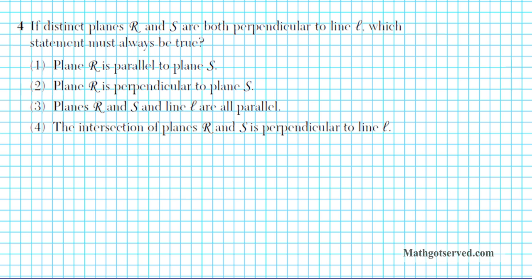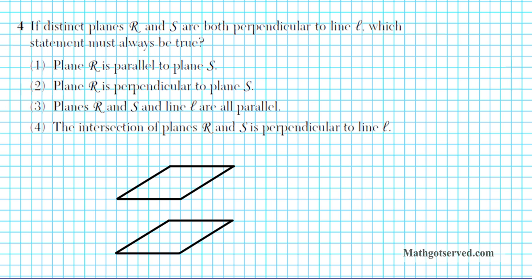Let's look at problem number 4. It says: if distinct planes r and s are both perpendicular to line l, which statement must always be true? Let's sketch the two planes — this is plane r and this is plane s.